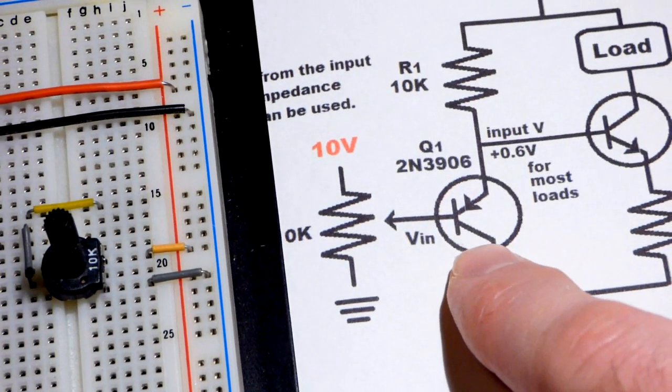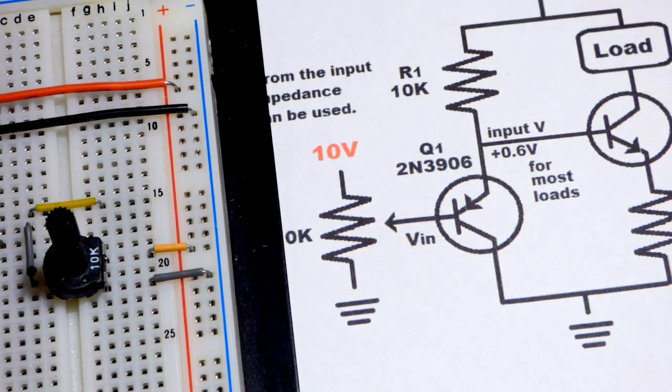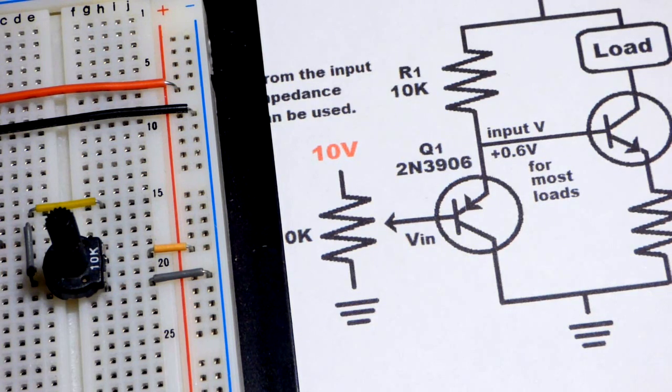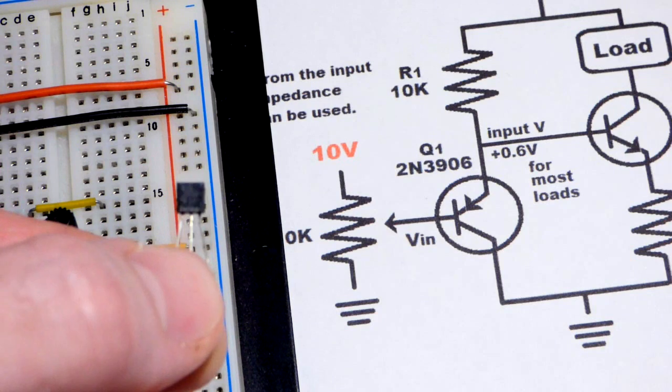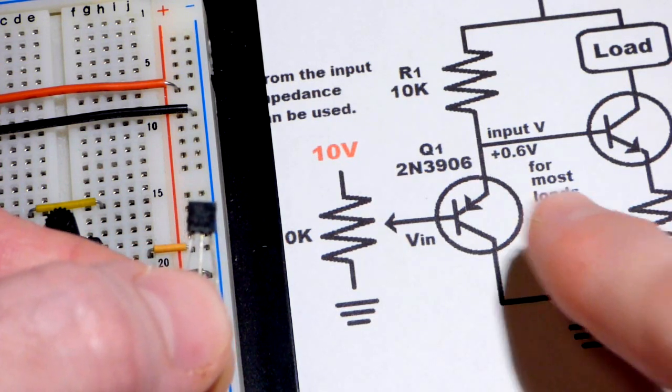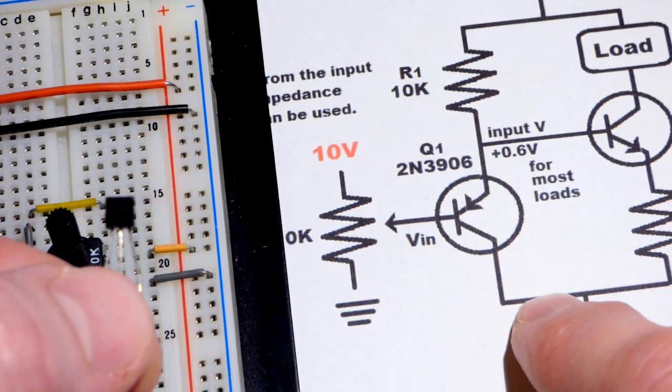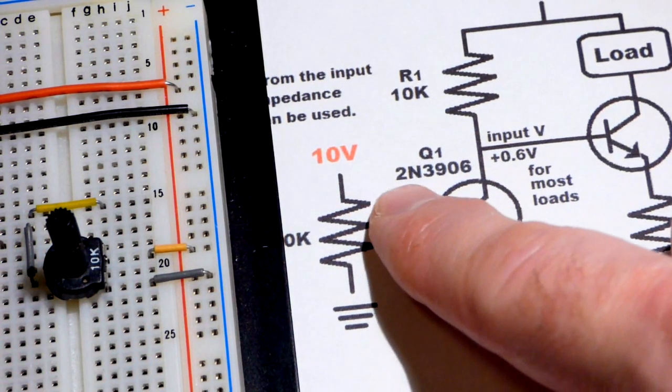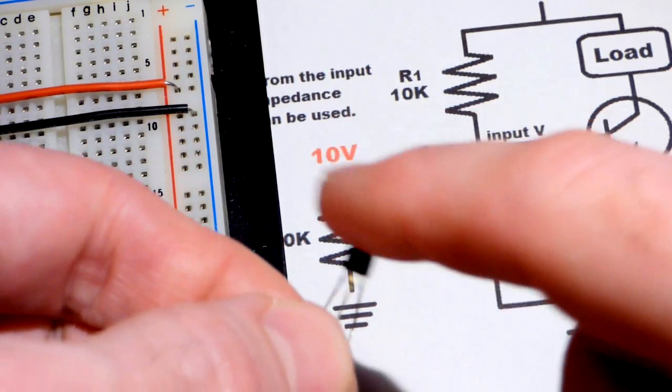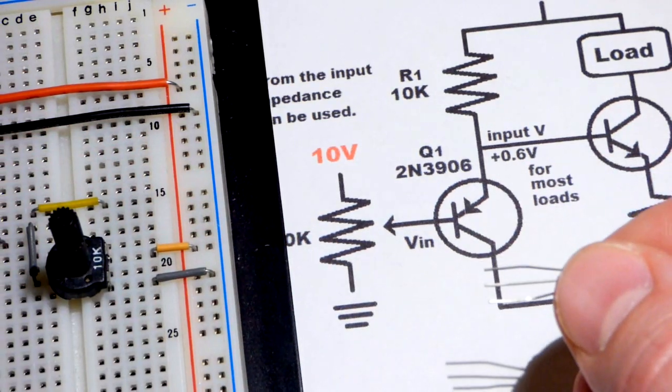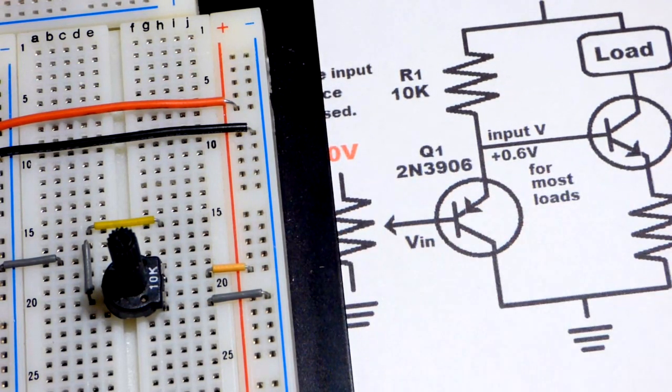We're going to use a 2N3906 PNP transistor. Looking at the flat side, the left pin is the emitter where the arrow is, middle pin is the base, and the right pin is the collector. Any bipolar junction transistor that starts with 2N should have that same pin layout.